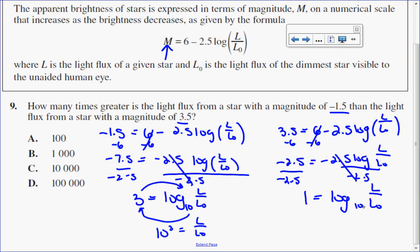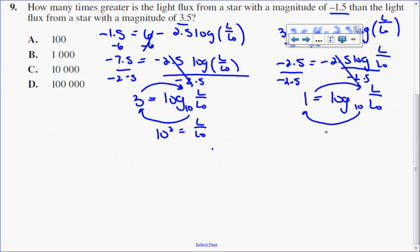A log without a base shown has an implicit base of 10. So again, converting to exponential form, I get 10¹ = L/L₀.